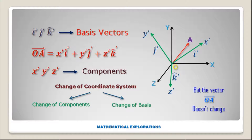On the basis of how the basis vectors and components change, we get two types of vectors: one is contravariant and the other is covariant. Here we will discuss only the contravariant vector.